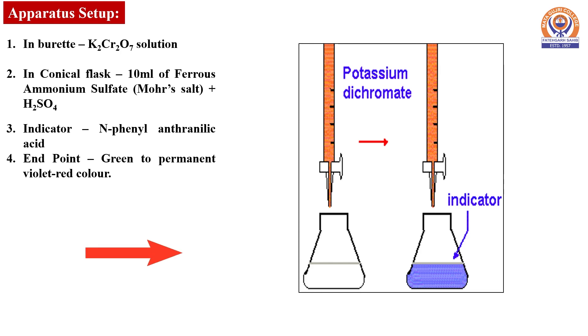The schematic diagram for the experimental setup is represented here where potassium dichromate is taken in burette, Mohr salt and dilute sulfuric acid are taken in the conical flask, indicator used is N-phenyl anthranilic acid, and the endpoint is color change from green to violet-red.